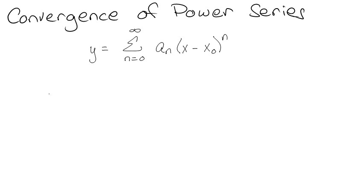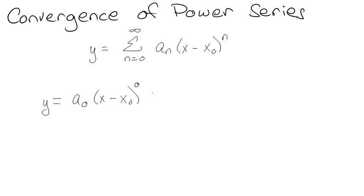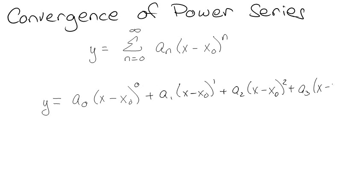We're going to talk about the convergence of power series. A power series is a summation where n goes from 0 to infinity. That means you've got a₀, then a₁(x minus x₀) to the first, a₂(x minus x₀) squared, a₃(x minus x₀) cubed, and on and on — where x₀ is just a general point.